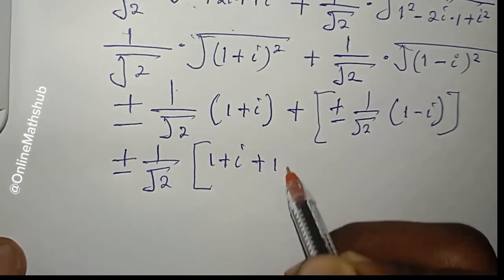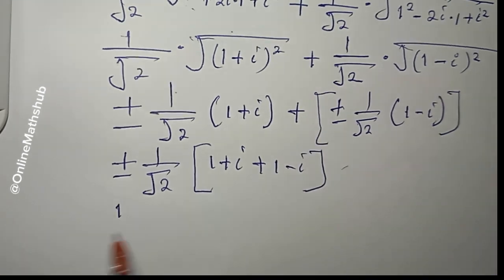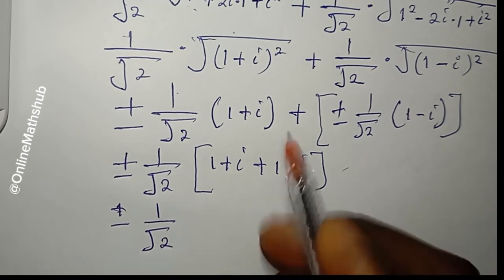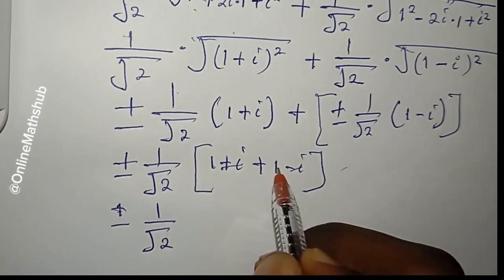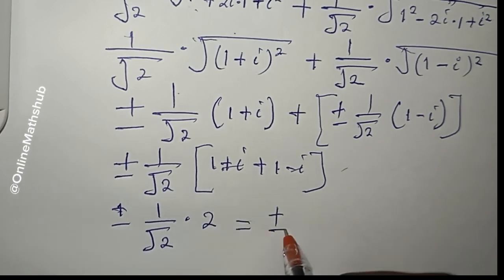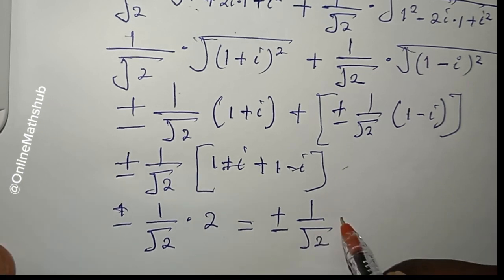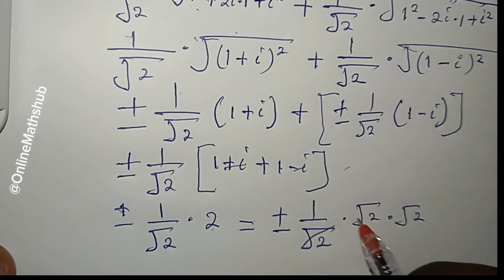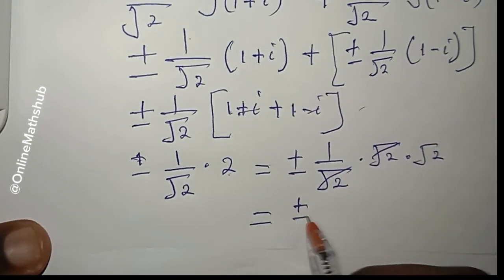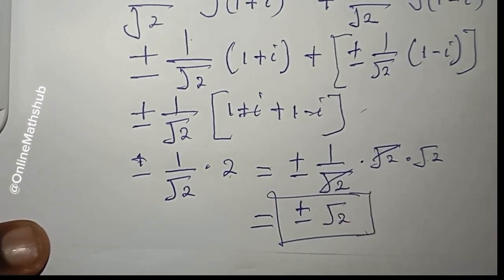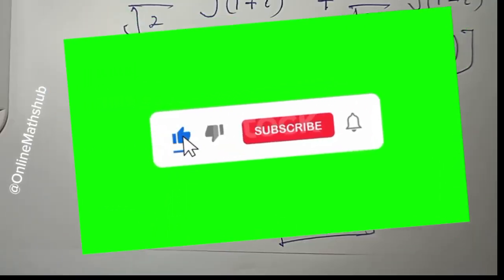Inside the brackets, i and -i cancel, and 1 + 1 = 2, so we have ±(1/√2) times 2. I can write 2 as √2 times √2, and one √2 cancels with the denominator, giving us a final answer of ±√2. That's the value of the expression. If you enjoyed this video, don't forget to like and subscribe. See you in the next video!